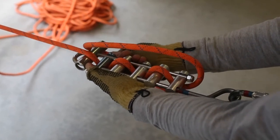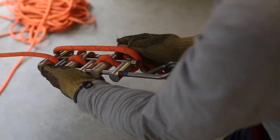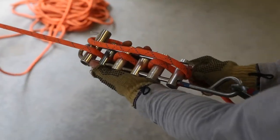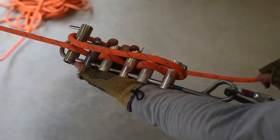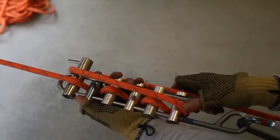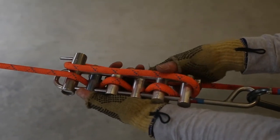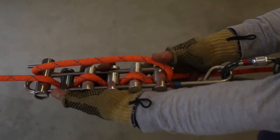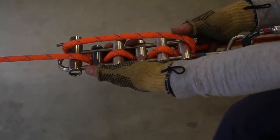With all six bars engaged if I start to weight this I can actually begin to move. As I go over the edge I'd want to have all of my bars engaged.